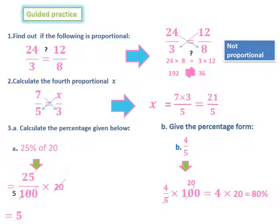Here, we have guided practice. Number 1: Find out if the following is proportional. 24 over 3, is it equal to 12 over 8? We cross multiply the two ratios. Then, 24 times 8, is it equal to 3 times 12? 24 times 8 is 192, and 3 times 12 is 36. But, 192 is not equal to 36. Then, they are not proportional.